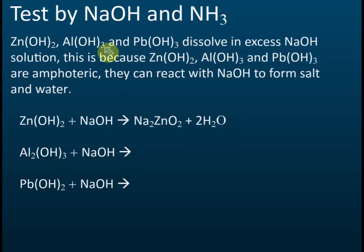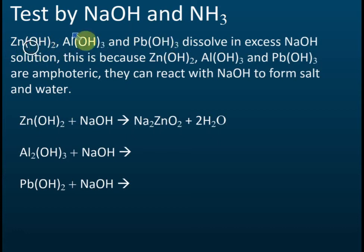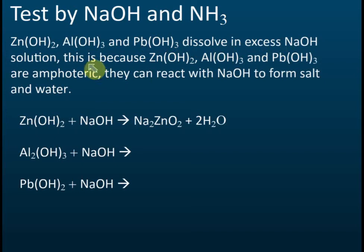Some precipitates dissolve in excess sodium hydroxide. For example, zinc hydroxide, aluminium hydroxide, and lead hydroxide — these three are insoluble and form a white precipitate initially, but they will dissolve in excess sodium hydroxide solution. The reason is that these three hydroxides are amphoteric.